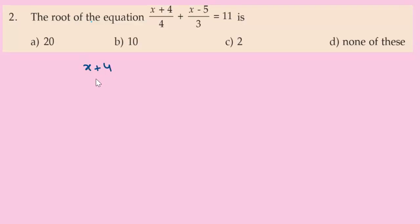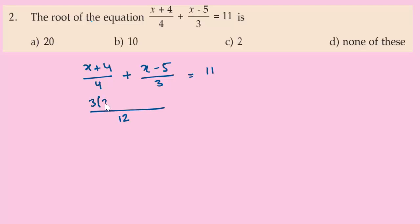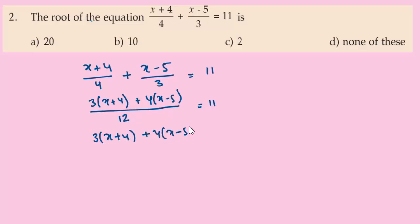We have the equation (x+4)/4 + (x-5)/3 = 11. The LCM of 4 and 3 is 12. Multiplying through: 3 times (x+4) plus 4 times (x-5) equals 11 times 12.